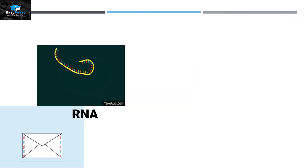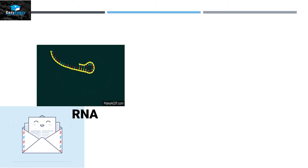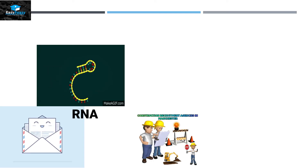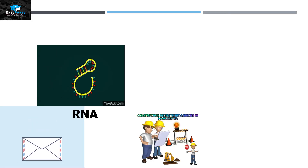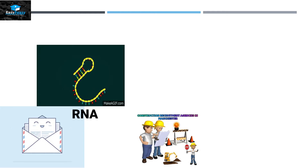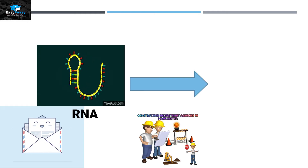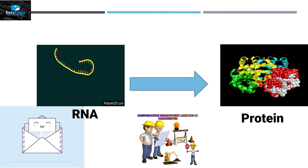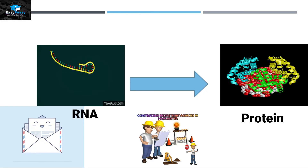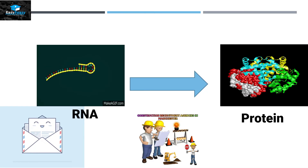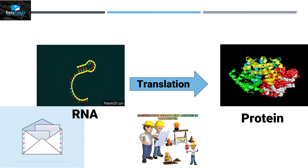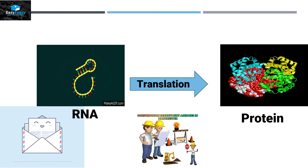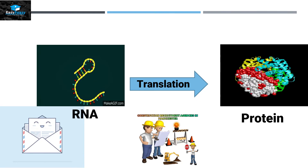The information provided by RNA in the cytoplasm, with the help of translation machinery, is converted into protein. So the process where the instructions of RNA are converted into protein is called translation.